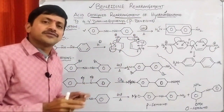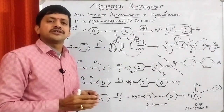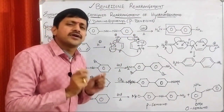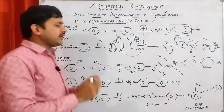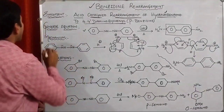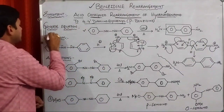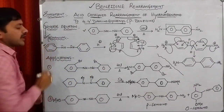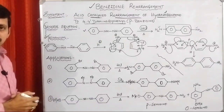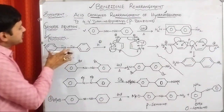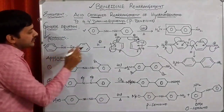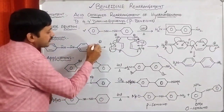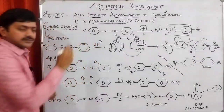The mechanism of this particular conversion is very simple. Let's see the mechanism. Initially, we are having hydrazobenzene. Hydrazobenzene is initially treated with acid.